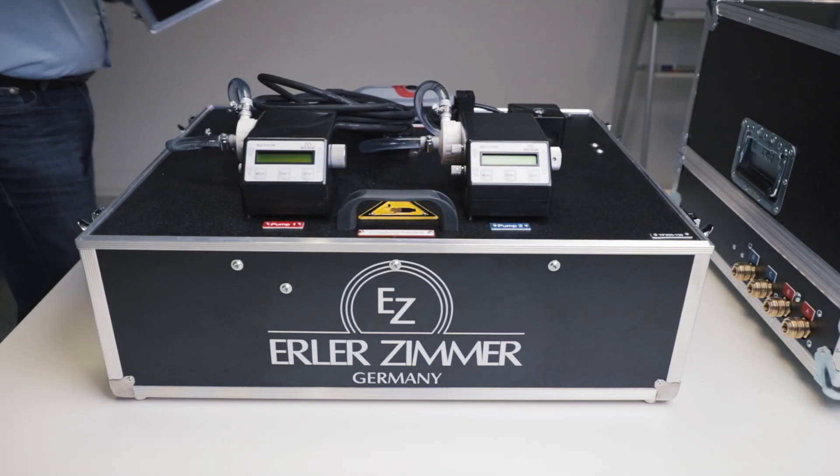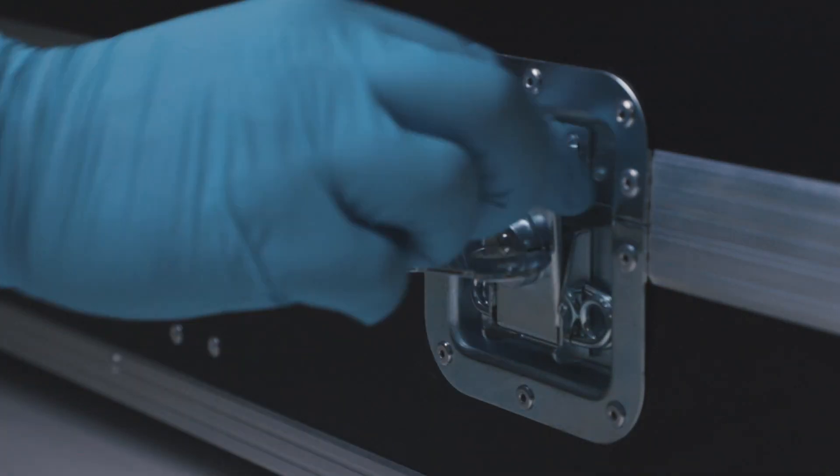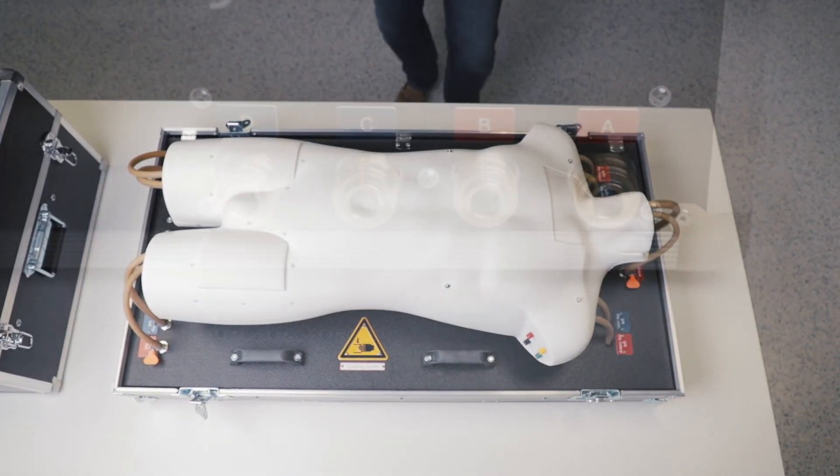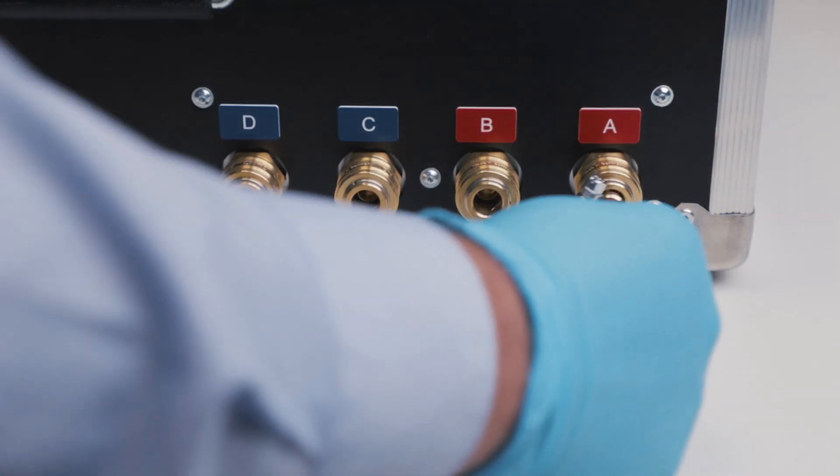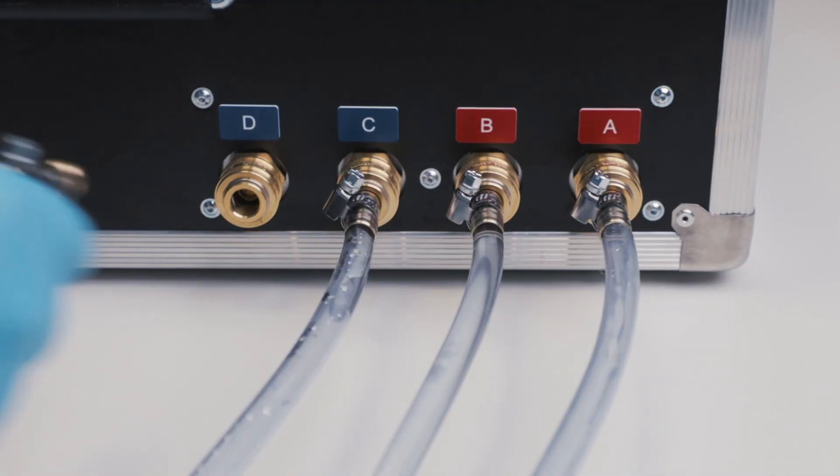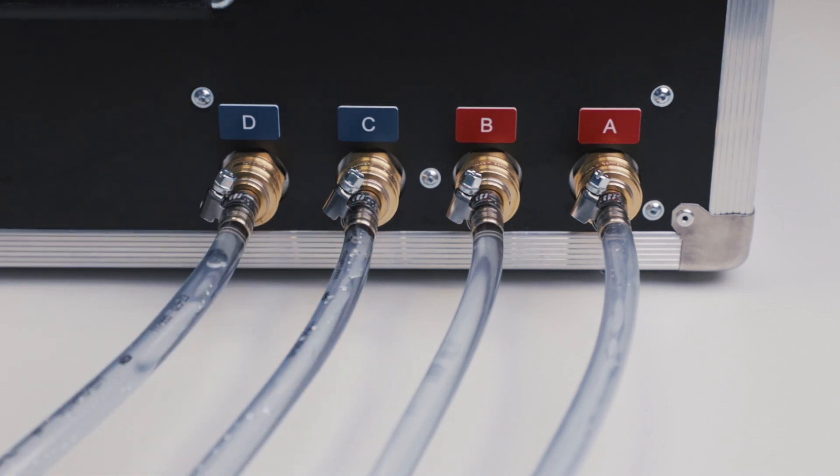The small one is the pump case. The bigger one is the body case. There are clear tubes that connect the two cases. Outlet A is connected to outlet A, B to B, C to C, and D to D.